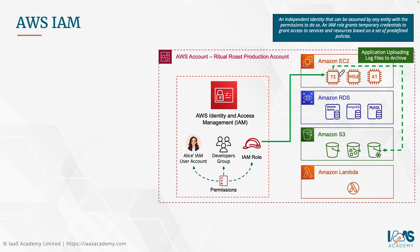With IAM roles, you can allow entities and resources sufficient permissions to perform actions against other services and resources on the AWS platform. Similarly, you might have a Lambda function that processes data stored in an S3 bucket — creating thumbnails of images, for example. To allow the Lambda function to access the S3 bucket, you would assign it an IAM role with the necessary permissions to perform that operation.